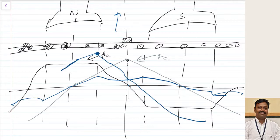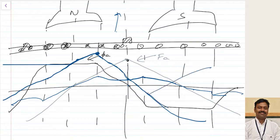The resultant MMF wave will be like this. This is the resultant flux wave and this is the armature flux. You can see that along the magnetic neutral axis, the armature MMF is not equal to zero and the armature flux is not equal to zero. As a result, the resultant flux is not equal to zero. To make it zero, there are different techniques.